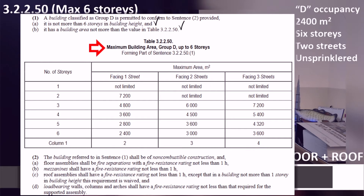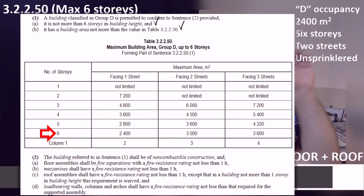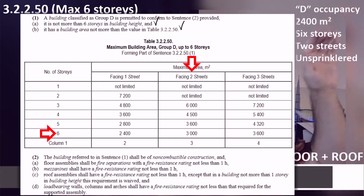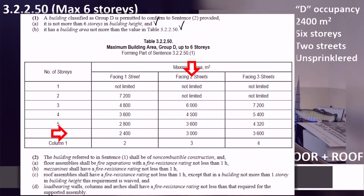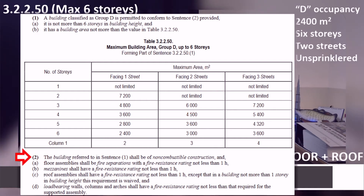Table 3.2.250 contains the maximum allowed building area depending on the number of stories. Our building has six stories, so we find that row in the table. Our building faces two streets, so we find that column as well. Where those two meet tells us the maximum allowed area. The table gives us 3,000 square meters — that is more than our 2,400 square meters, which means our building is allowed to work within the confines of this article, sentence, and table.